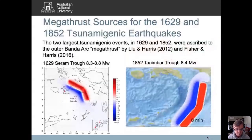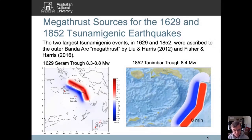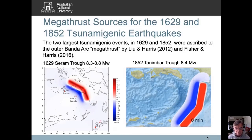Having a large earthquake accompanied by a large tsunami in the Banda Sea, it would be natural to ascribe this to the supposed megathrust on the outer Banda arc — subduction zones generate the largest tsunamis. In papers by Liu & Harris and Fisher & Harris, they studied the 1629 Seram Trough earthquake and the 1852 Tanimbar Trough earthquake. Based on the tectonics available at the time, they inferred these occurred on the megathrust and tried to determine magnitudes that could account for the observations.